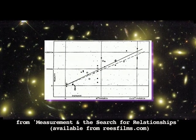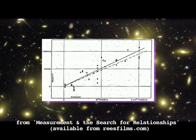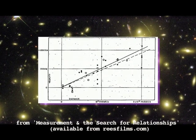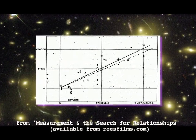Hubble's original data, plotting distance on the horizontal axis and velocity on the vertical axis, produces a straight line.